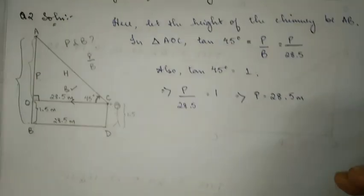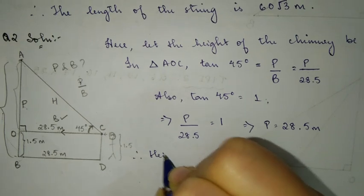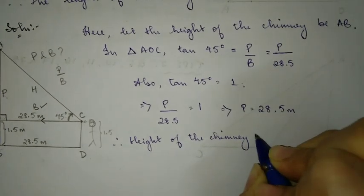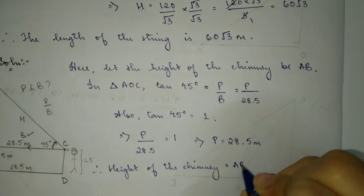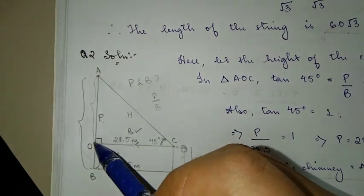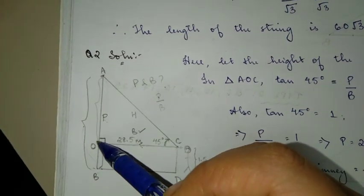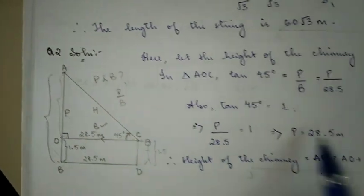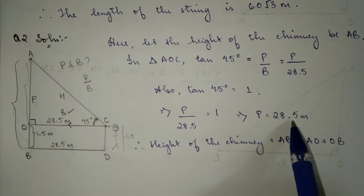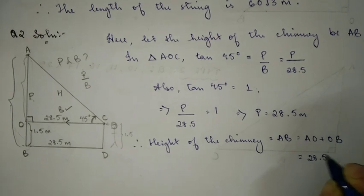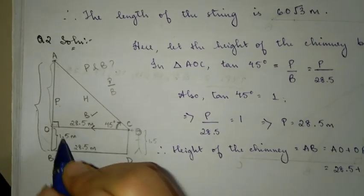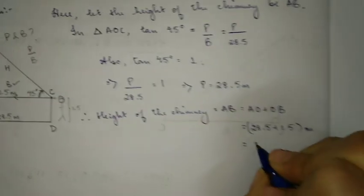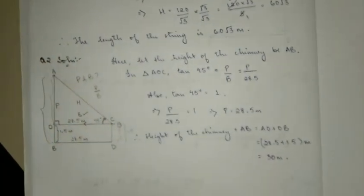Therefore, height of the chimney - it's equal to AB. AB is AO plus OB. AO is 28.5. So if we add 28.5 and 1.5, you get 30 meters. So this is the final answer.